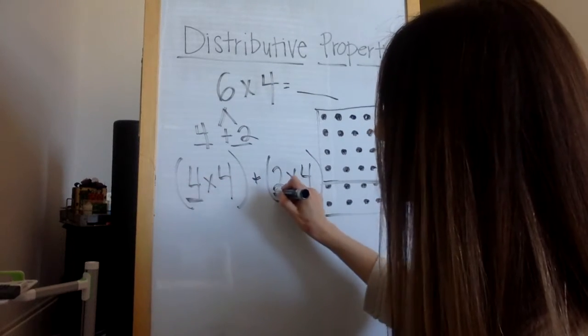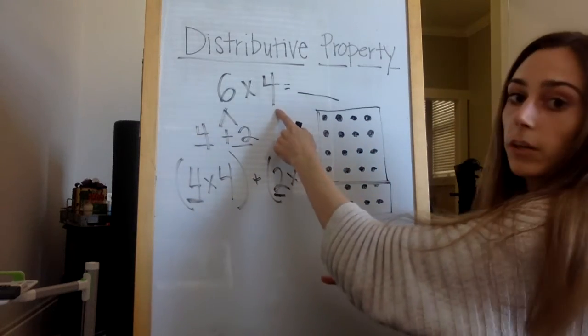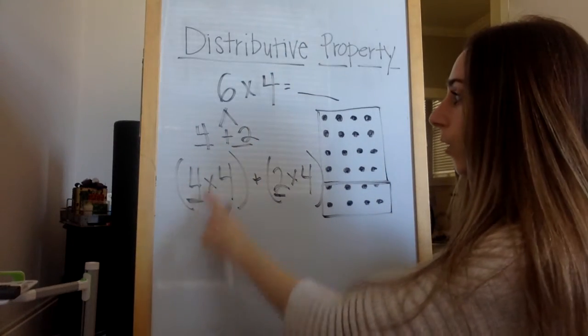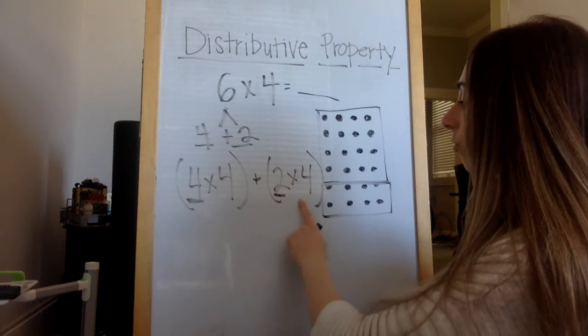I distributed them, and then I share them with the four again. Four rows of four plus two rows of four.